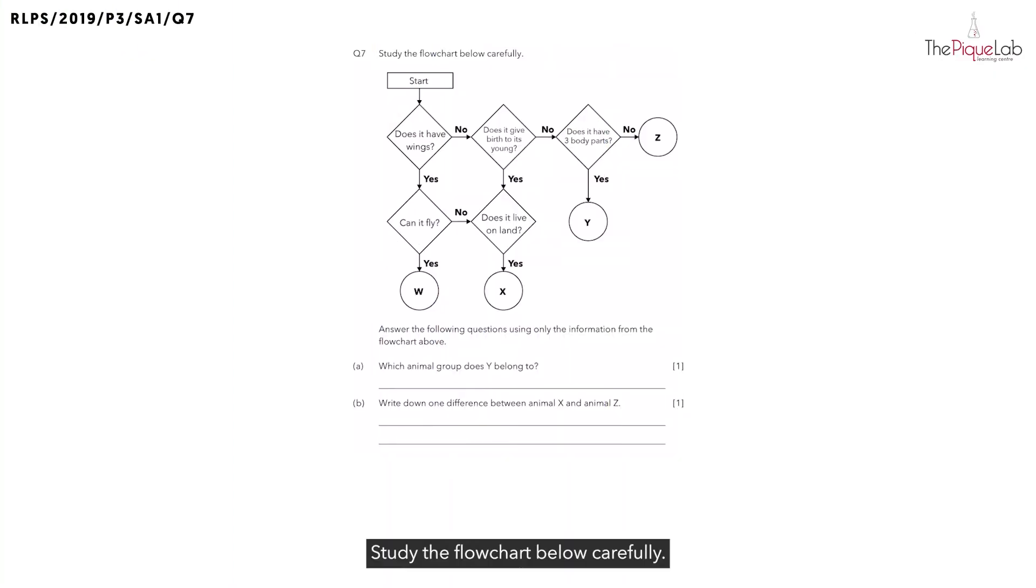Question seven: Study the flowchart below carefully. Answer the following questions using only the information from the flowchart above. In part A they ask which animal group does Y belong to. Whenever we have a flowchart question it is good to prepare some highlighters or different colored pens.